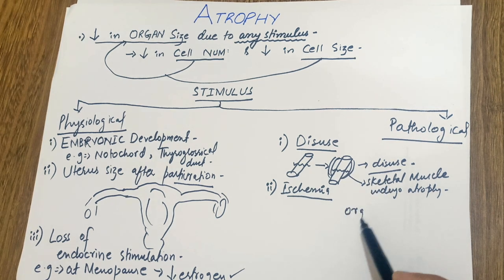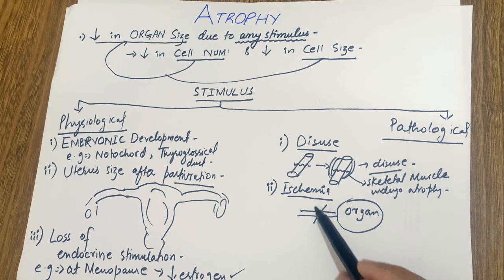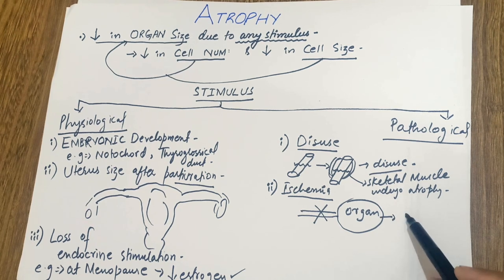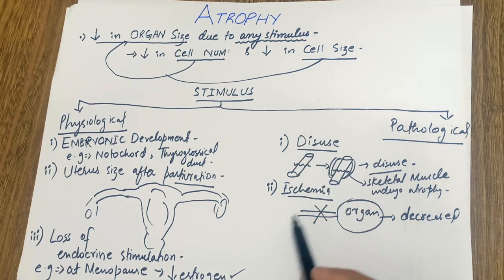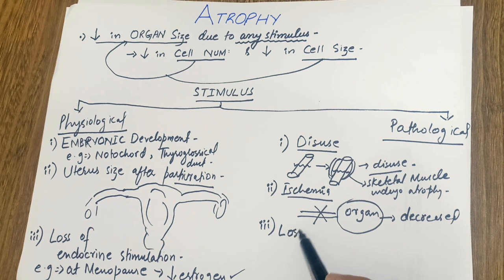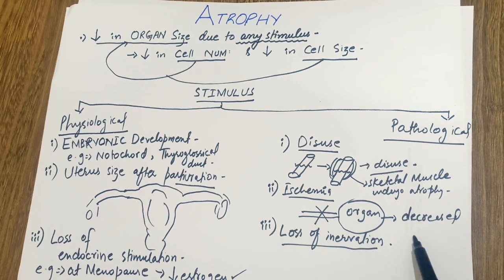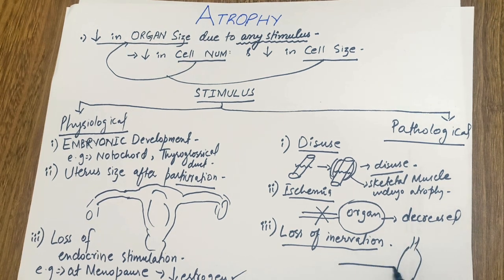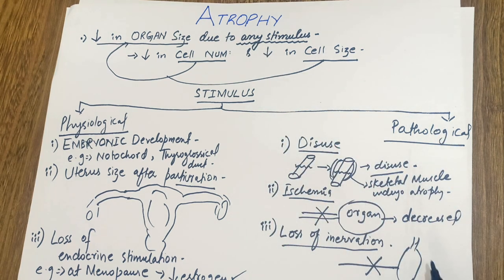For example, there is an organ such as the heart, lungs, or liver, and blood supply is provided to that organ. When that blood supply is cut off for any reason, the organ size shrinks — that decreased size due to decreased blood supply is also a pathological cause of atrophy. The third pathological cause is loss of innervation. When a muscle's nerve is injured or cut off, the muscle no longer performs its function, and thus the size of the muscle decreases.